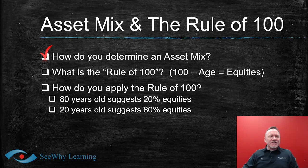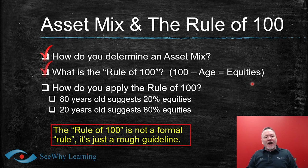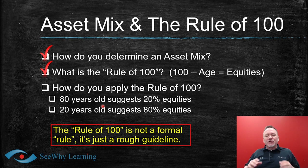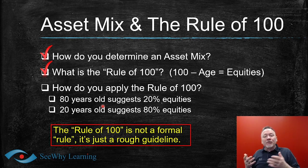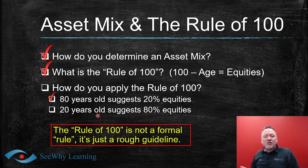The rule of 100 works like this: the client's age is the percentage of fixed income and cash in the portfolio, and 100 minus age is the percentage of equities. For example, for an 80-year-old client, 100 minus 80 is 20, so 20% should be in equities and the remaining 80% in fixed income and cash. For a 20-year-old client, 100 minus 20 is 80, so 80% should be in equities and the remaining 20% in fixed income and cash.